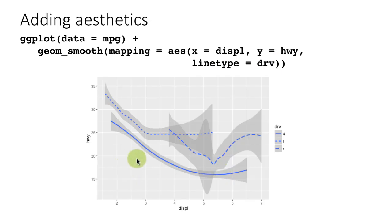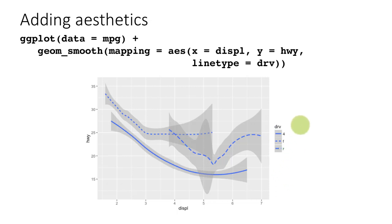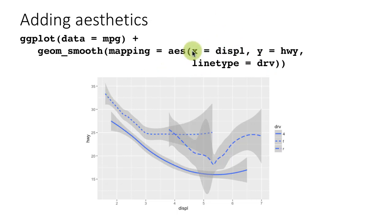So instead of getting one line as in the earlier example, we now have three lines, and each line is of a different type because we said line type depends on drive. The legend shows which line type corresponds to which drive type — the solid line is for four wheel drive, the line with short dashes is for front wheel drive, and the line with longer dashes is for rear wheel drive. It's simple to add additional aesthetics by adding them as arguments within the AES function.